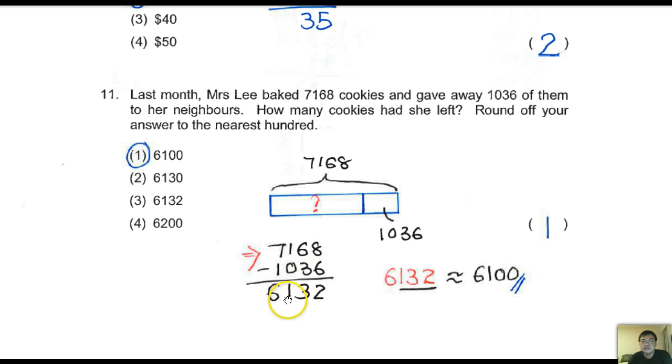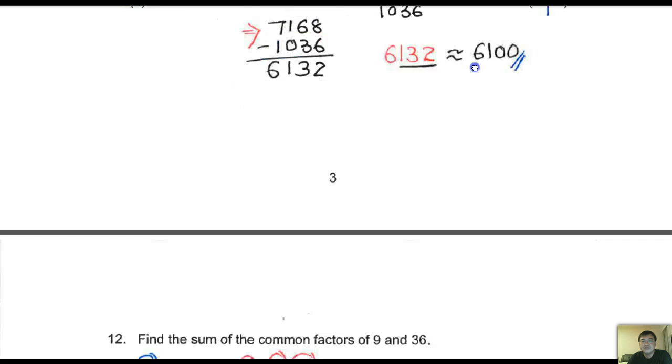Now, most pupils would just rush off and what they do is they minus the numbers together and get an answer 6132, and they will choose 6132 as the answer. Now be very careful, most would have not read this 'nearest hundred.' Round off to nearest hundred is here. 6132 - 32 is nearer to 0, so 6100. So the answer is 6100, number 1.